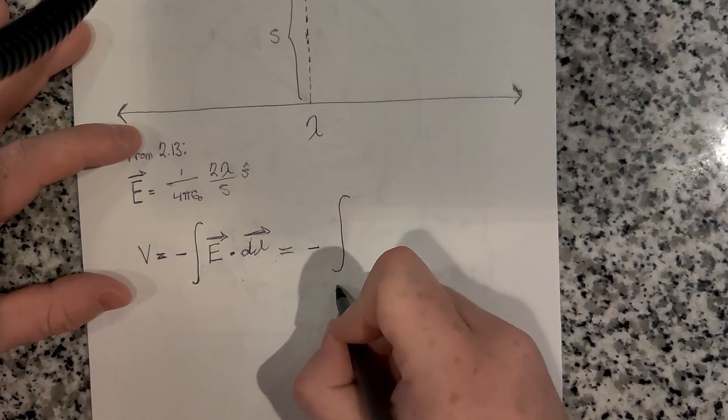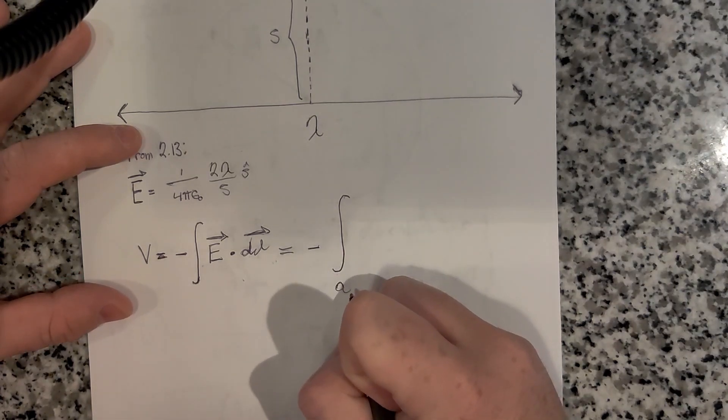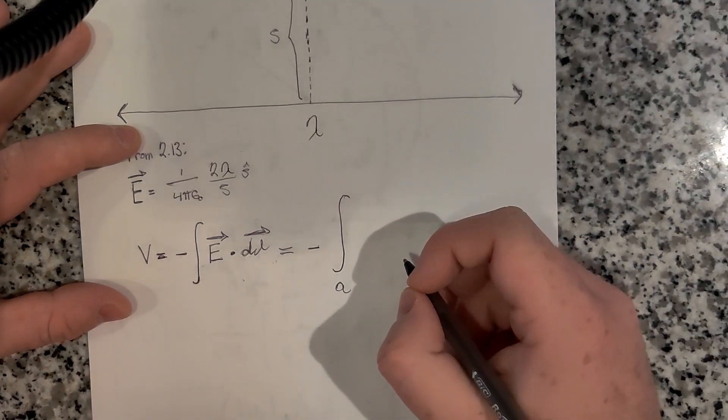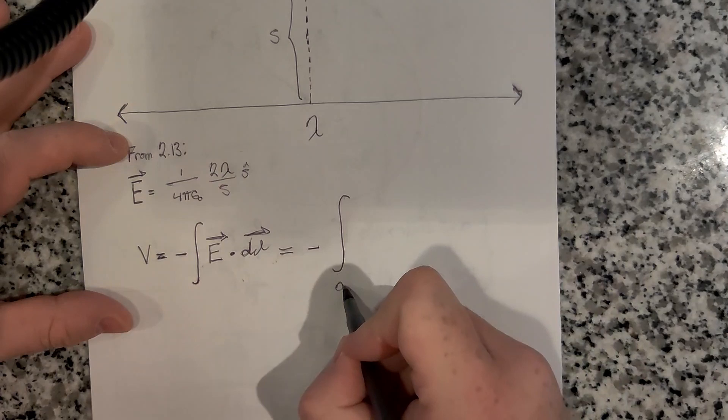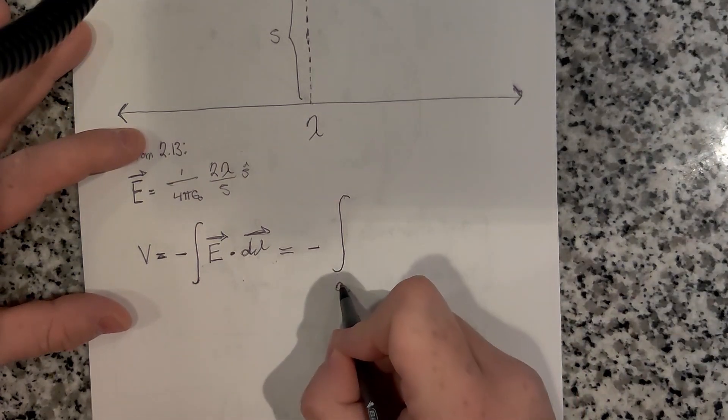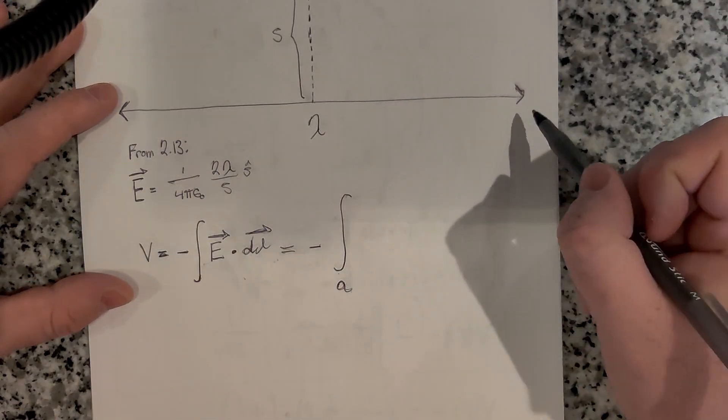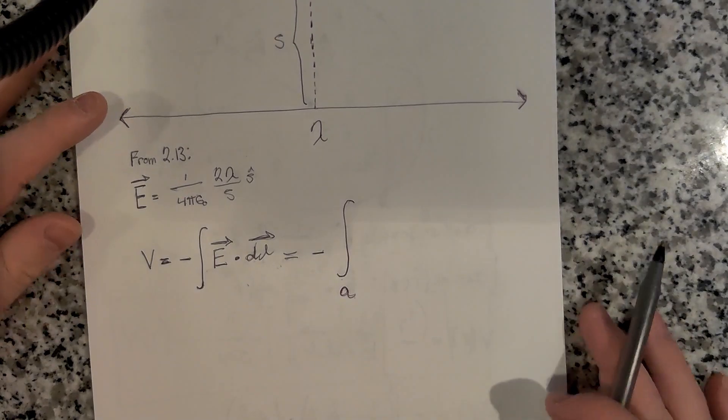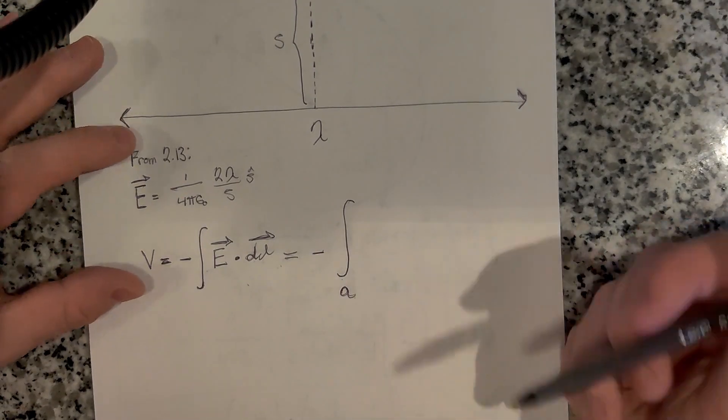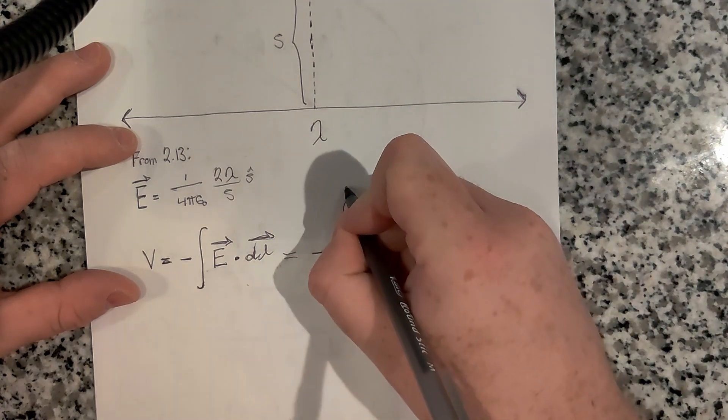Instead, let's just use a reference point of a. I think infinity is going to give us an answer that's not going to work. Let's just say that a is a point very far away from this wire. Not infinitely far, but so far away that it's almost considered infinitely far, just not infinity. We're going to go from our point a out in space to our point s.